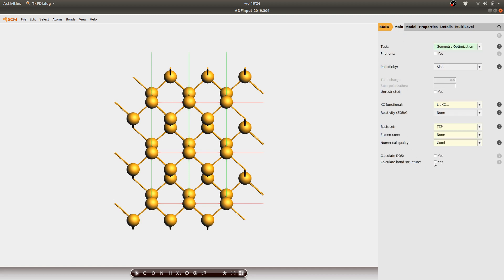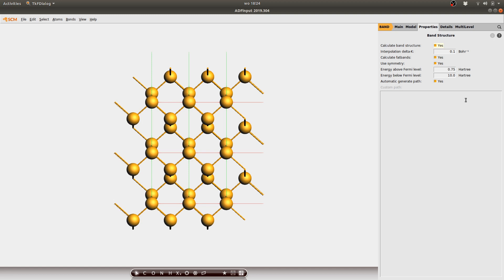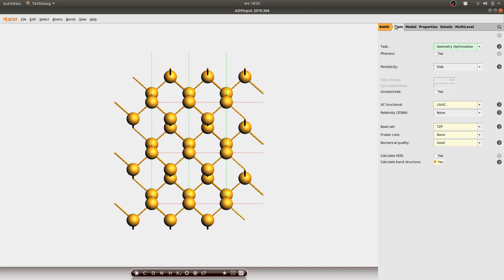Next I have to enable the calculation of the band structure because this is one of the quantities we're going to look at and furthermore I increase the number of interpolation k-space points in order to calculate this band structure.